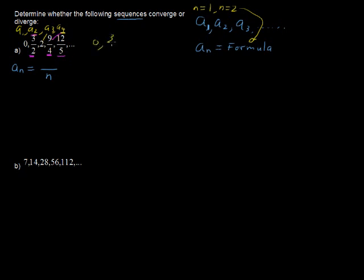Let me further rewrite this. So I've got 0, 3 halves. If I want to make that denominator 3, I'll have to make this 6 over 3, and then 9 over 4, and then 12 over 5, and so on.